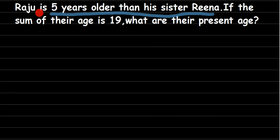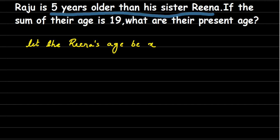For example, suppose Reena's age is 10, then Raju's age will be 10 plus 5, which is 15. But here we don't know Reena's age, since Raju's age is linked to Reena's. So we're going to assume Reena's age to be a variable. Let Reena's age be x — you can take any variable, but make sure to write it in a small letter.